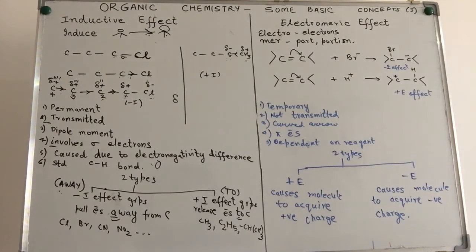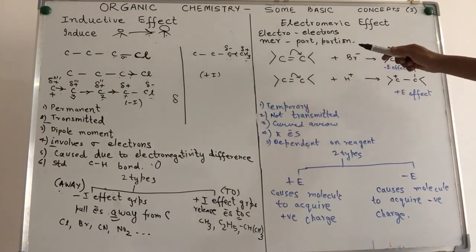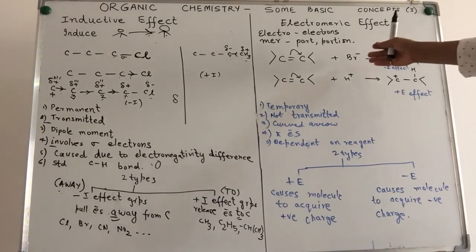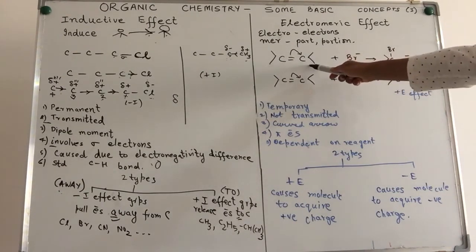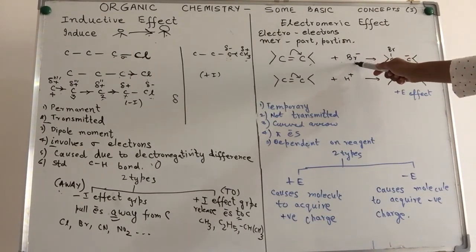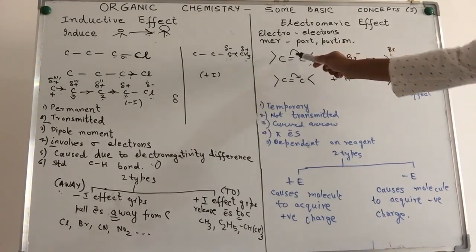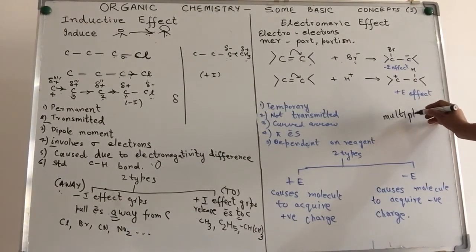Let's come to the other effect — electromeric effect. Just break it down: electro is electrons, meric is portion — the movement of electrons to one portion of the molecule. Electromeric effect is something which happens when a reagent comes close to a molecule. It is not there in the molecule on its own. This molecule is very impartial — equally divided electrons — but when a reagent comes in, for example a bromide ion, because of the bromide ion the electron pair, and here we are talking about the double bond, this is an effect taking place in compounds which have multiple bonds — double or triple bonds — meaning pi electrons are involved.